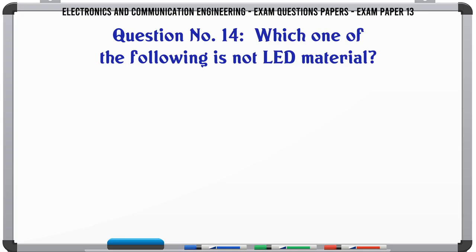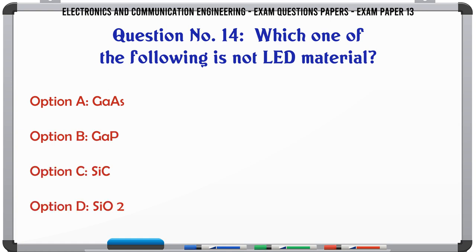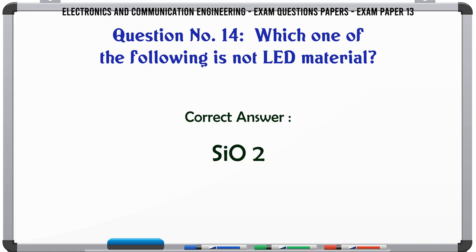Which one of the following is not lead material? A: GaAs, B: GaP, C: SiC, D: PbSiO2. The correct answer is PbSiO2.